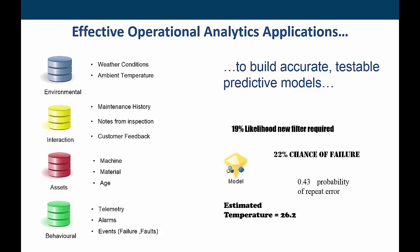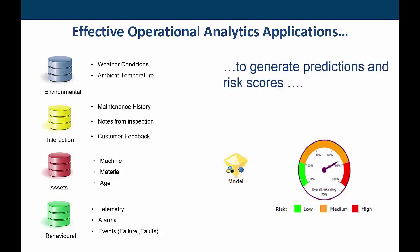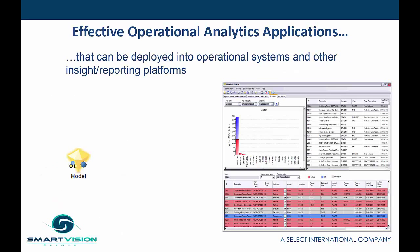We do this in order to build accurate and testable predictive models. Those predictive models might estimate things like the likelihood of a new component part being required, the percentage chance of a failure, the probability of a repeat error, or even something related to the condition under which an asset is performing, such as temperature. In turn, these models generate predictions and risk scores, which can then be incorporated into operational systems or insight and reporting platforms.